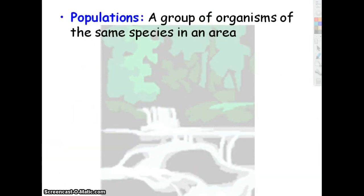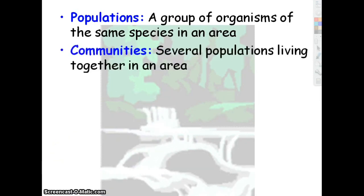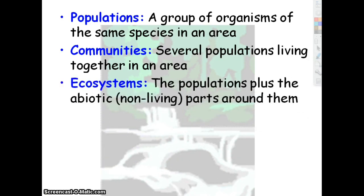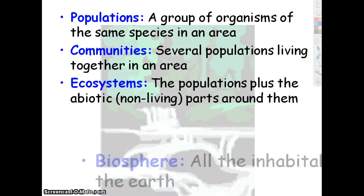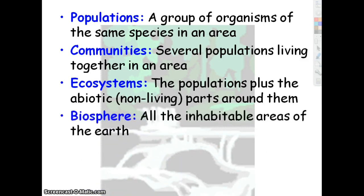A population is a group of organisms of the same species — a population of deer, a population of ducks — that tend to be interbreeding in a particular area. A community is several populations; a pond community would be the fish, algae, plankton, invertebrates, bacteria, etc. An ecosystem is basically these communities plus the non-living things: the minerals in the water, the amount of water available, the acidity of the soil — all the non-living stuff that affects them. The biosphere means all the inhabitable areas of the whole earth. These are our levels of organization.